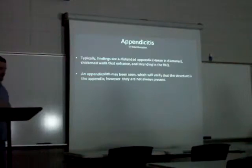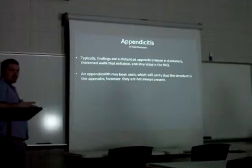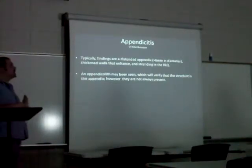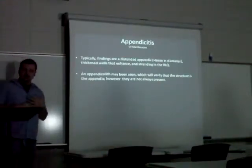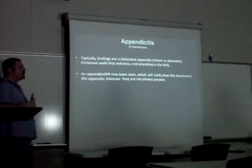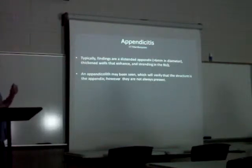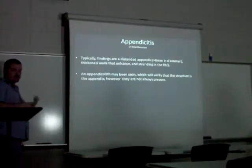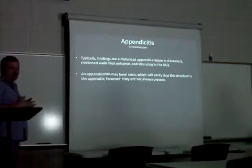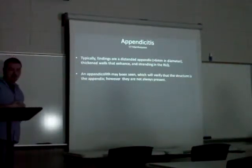On CT, diagnosing appendicitis involves looking for a distended appendix greater than 6 millimeters in diameter with thickened walls that enhance with contrast, located in the right lower quadrant. In elderly or middle-aged patients, you may also see an appendicolith or fecal lith, which verifies that the structure you are looking at is the appendix. However, appendicoliths are not always present.